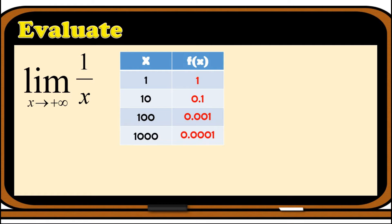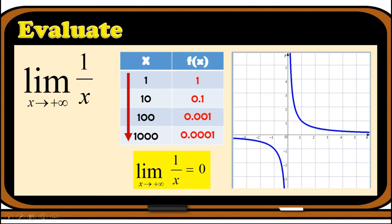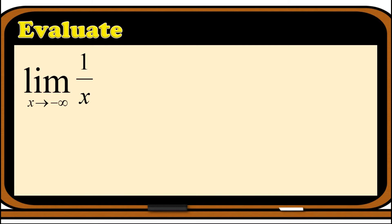Observe what happens as we approach positive infinity: the values of f(x) are approaching zero. For ten thousand, one hundred thousand, one million — the values keep approaching zero. So we conclude that the limit of 1/x as x approaches positive infinity equals zero. We can verify this with the graph: as we move to the right of x, representing positive infinity, the graph gets closer and closer to zero on the y-axis.